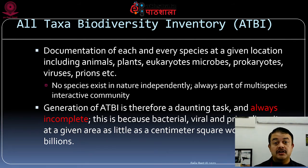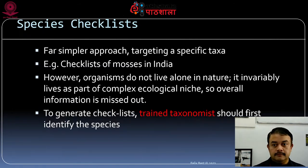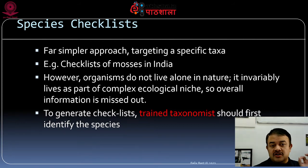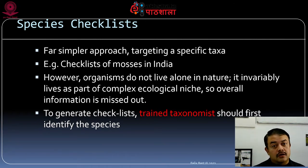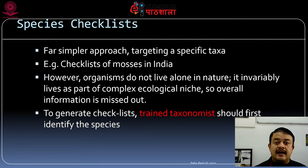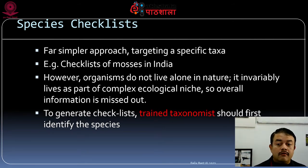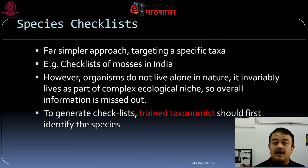It is impossible to inventory everything, but we can still attempt ATBI for at least all eukaryotes in one location. A simple species checklist targeting one specific taxon — like mosses in India — is a simpler approach, but organisms do not exist alone in nature; they always live in association with other organisms in complex ecological niches, so overall information is inevitably missed. That is why simple checklists are hardly fully informative.